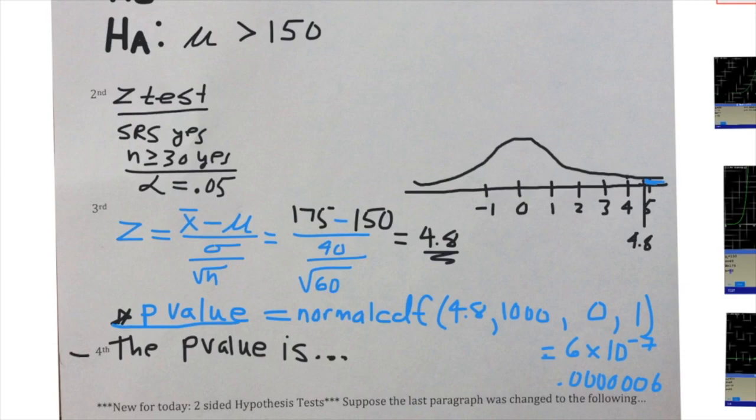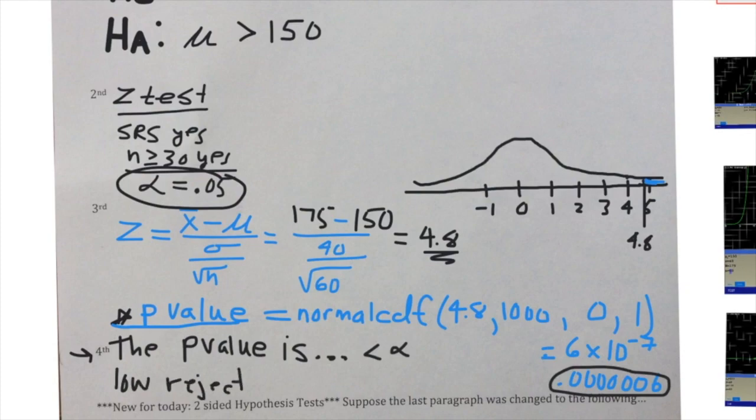That brings us to our final step. Once we have our p-value, compare the p-value to the significance level. The p-value is very very low, much lower than 5 percent, so the p-value is less than the significance level. So we'll write: the p-value is low, reject the H0, which means we believe that the alternative is probably correct—that the true average is actually greater than 150.